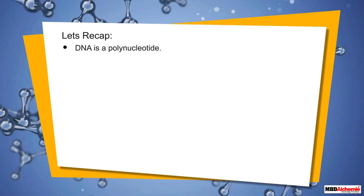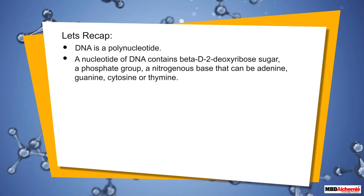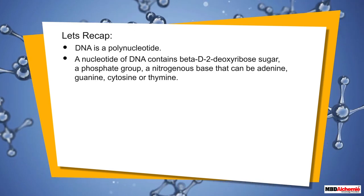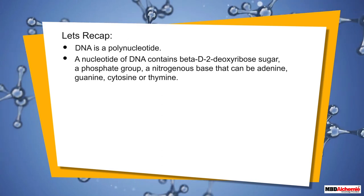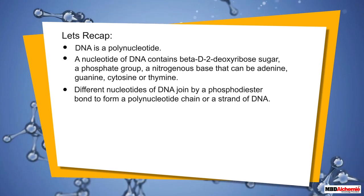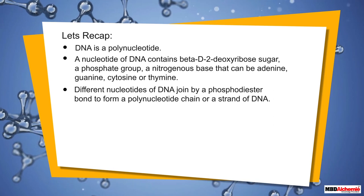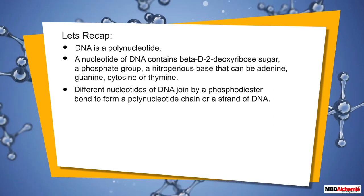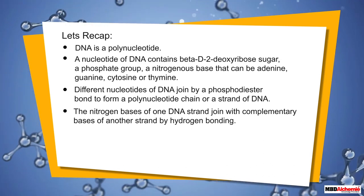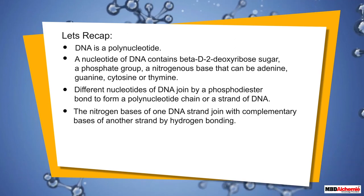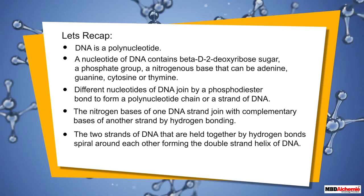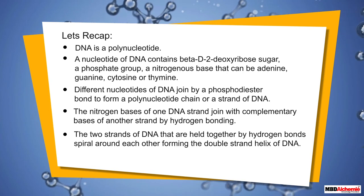To recap: DNA is a polynucleotide. A nucleotide of DNA contains beta-D-2-deoxyribose sugar, a phosphate group, and a nitrogenous base that can be adenine, guanine, cytosine, or thymine. Nucleotides join by phosphodiester bonds to form a polynucleotide strand. Complementary nitrogen bases of two strands join by hydrogen bonding, and the two strands spiral around each other forming the double strand helix of DNA.